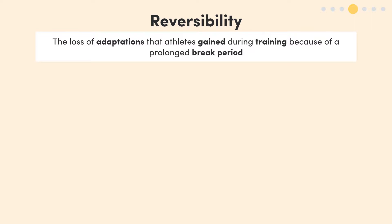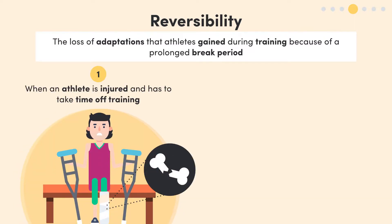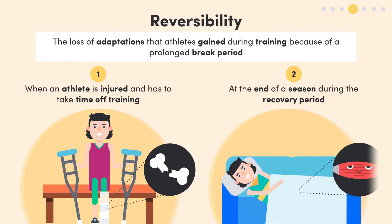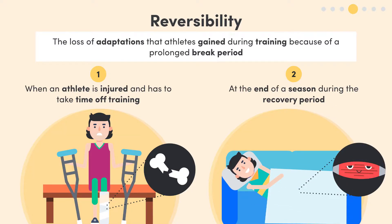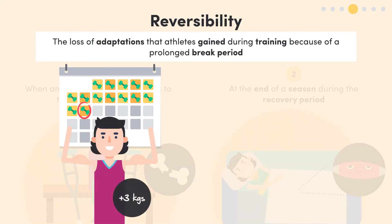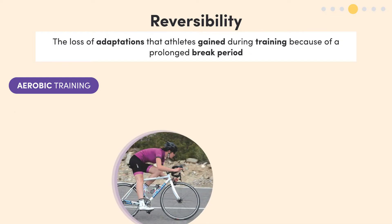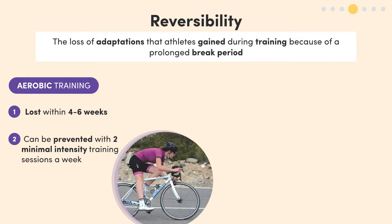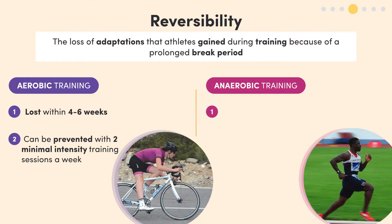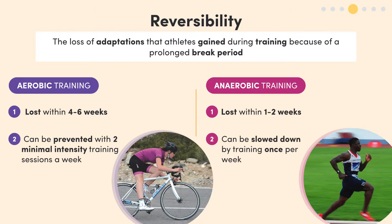This principle occurs when an athlete is injured and has to take time off training, or at the end of a season during the recovery period. Adaptations tend to be lost at a similar rate to which they were gained, so gaining 3 kilos of muscle in 2 weeks means this muscle would be lost very quickly if training stopped. Aerobic adaptations tend to be lost within 4 to 6 weeks, but this can be somewhat prevented with 2 minimal-intensity training sessions a week. Anaerobic adaptations are lost at a faster rate — within 1 to 2 weeks — but can be slowed down by training just once per week.